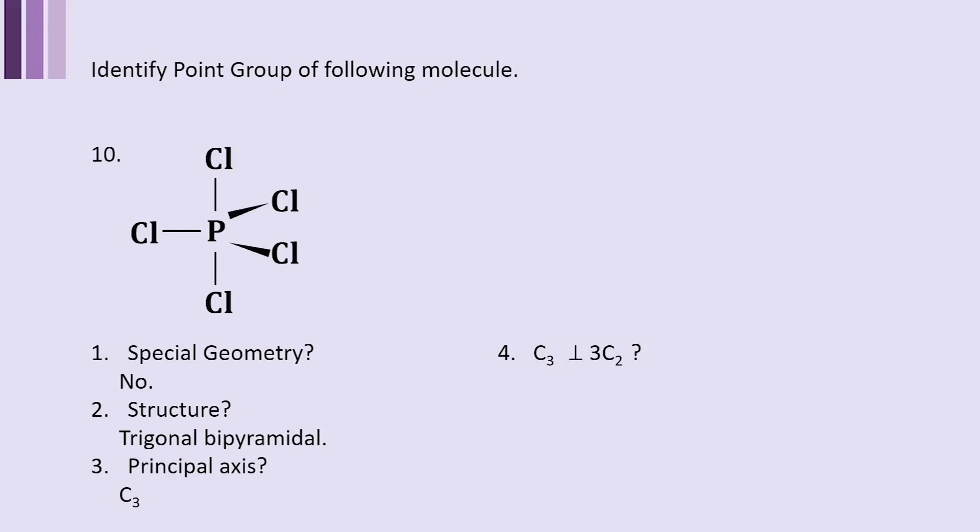Yes it has. Each C2 axis is passing through the horizontal Chlorine Phosphorus bonds. Does it have Sigma H? Yes, all three Chlorine and Phosphorus in the plane have the Sigma H property because it is perpendicular to C3 axis. You go to D group, point group is D and H, and since N is three, the point group is D3H. This is the same point group of boron trifluoride.